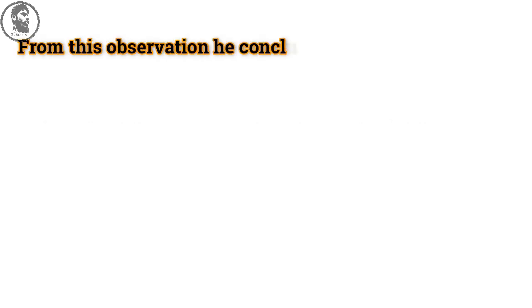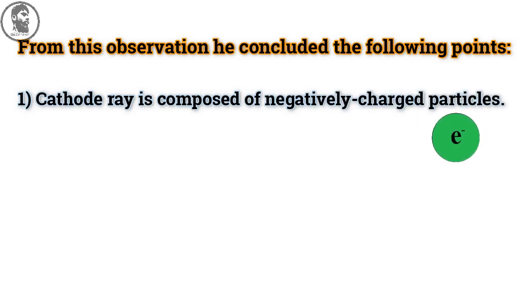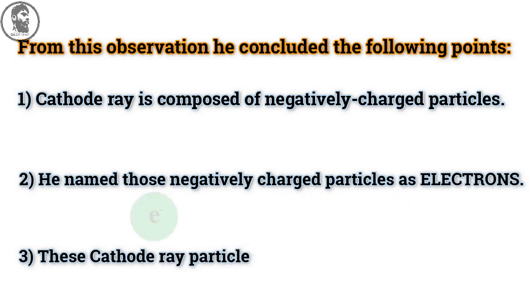From this observation, he concluded the following points. First, cathode ray is composed of negatively charged particles. Second, he named those negatively charged particles as electrons. And the third one, these cathode ray particles are having very less mass.